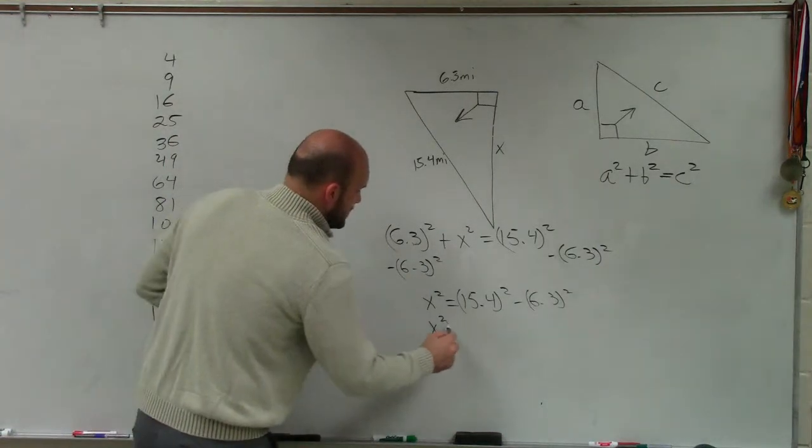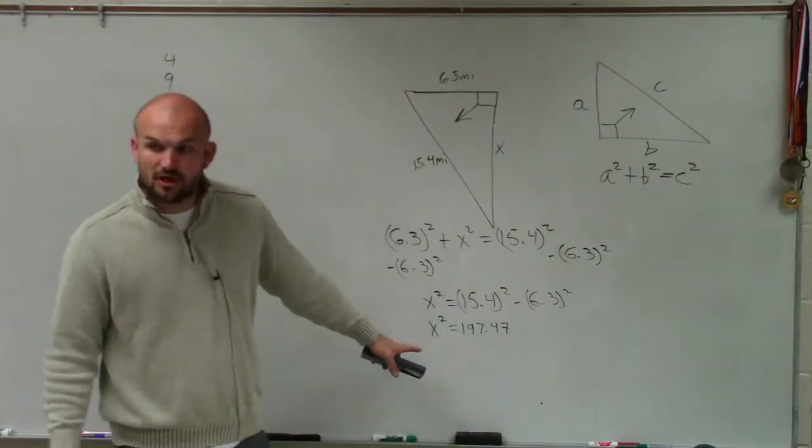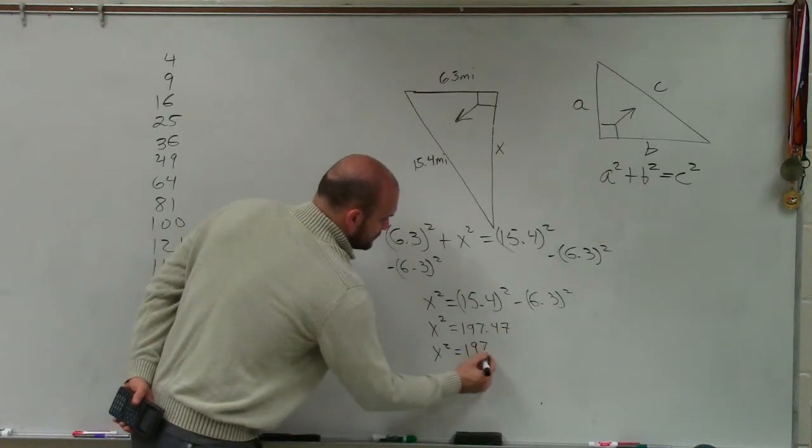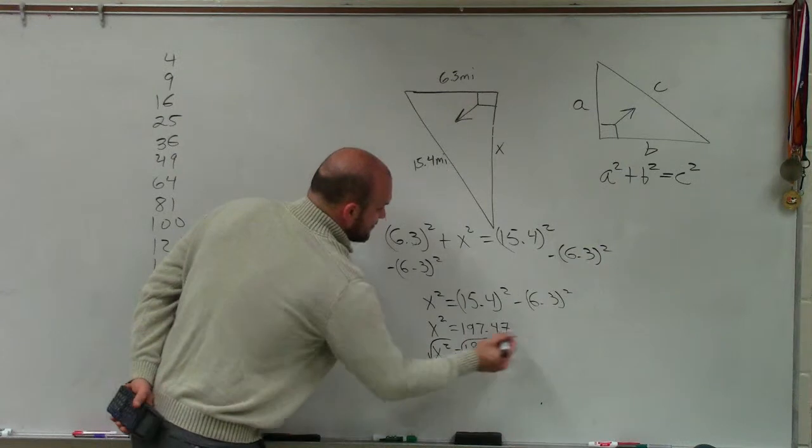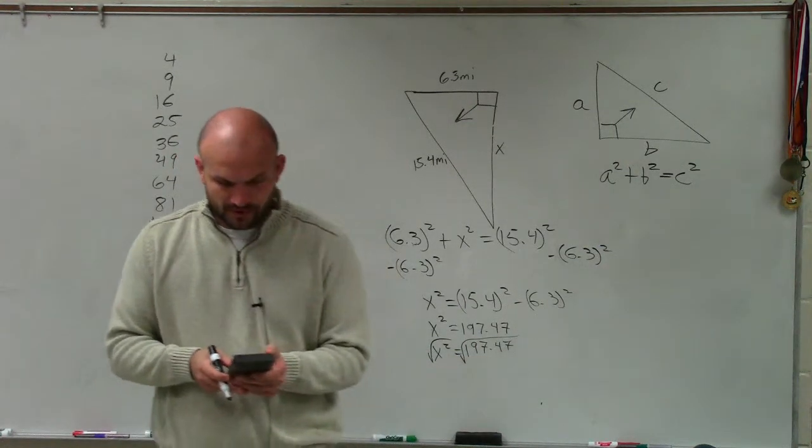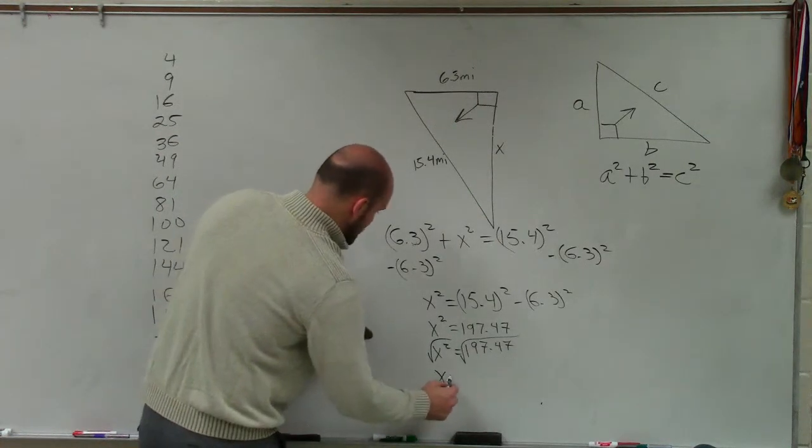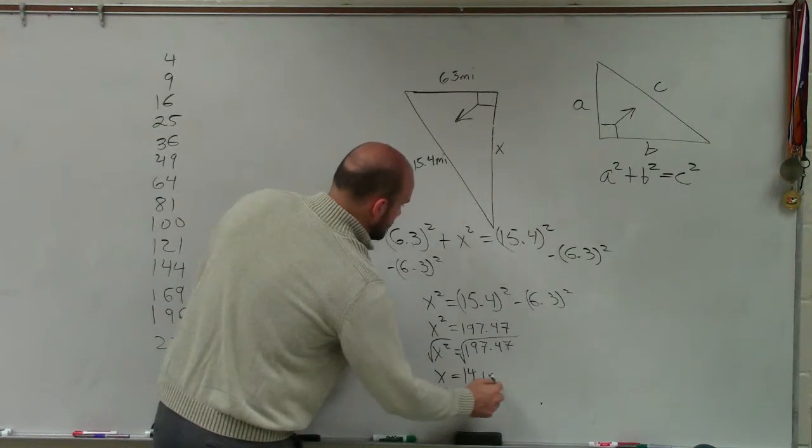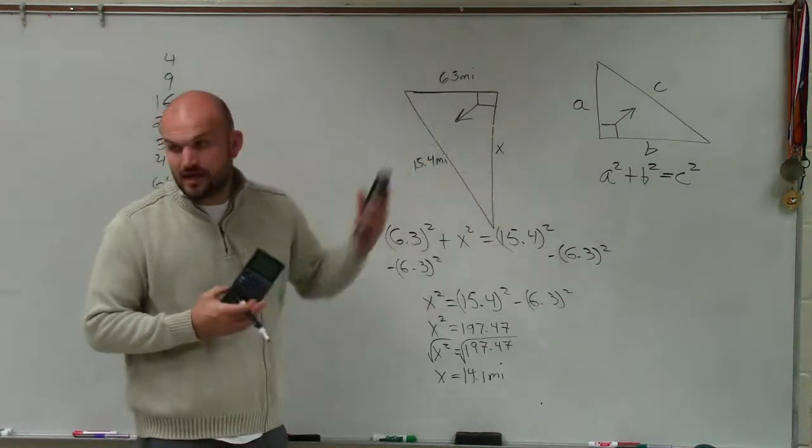So x squared equals 197.47. Then to solve for this, I'll now take the square root on both sides. So I just take this and I take my square root function. I say square root of my last answer, and I get 14.05, or I'll reduce that to 14.1 miles, since we're talking about triangle and miles.